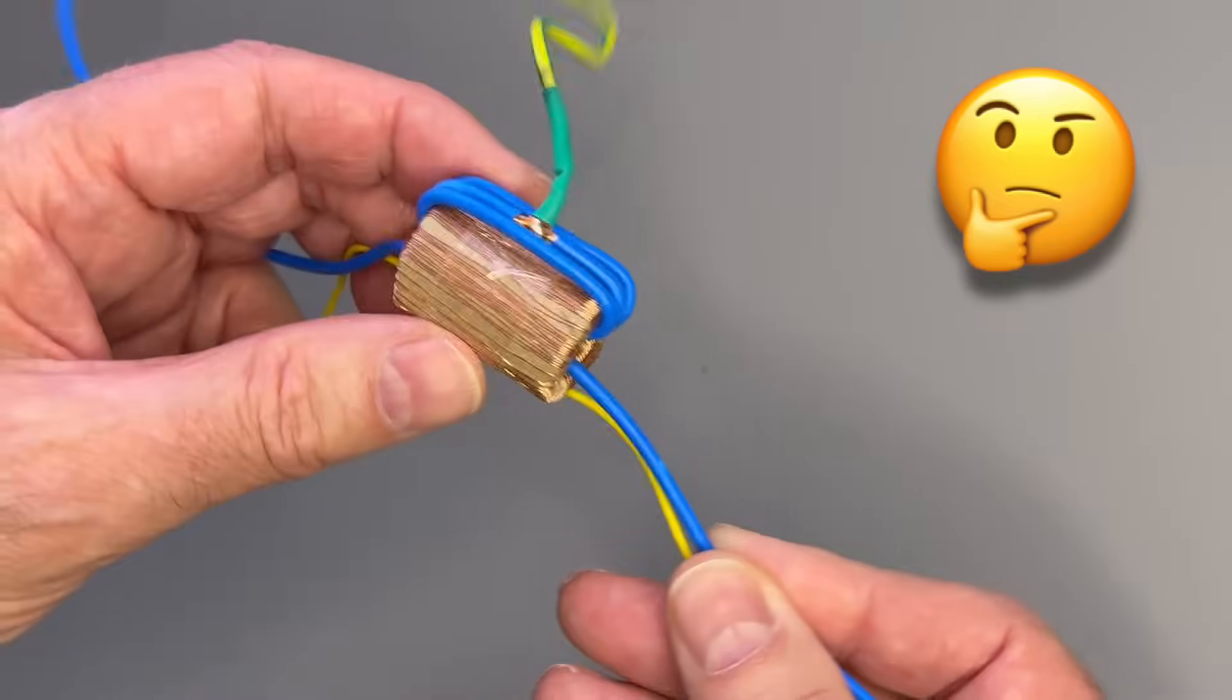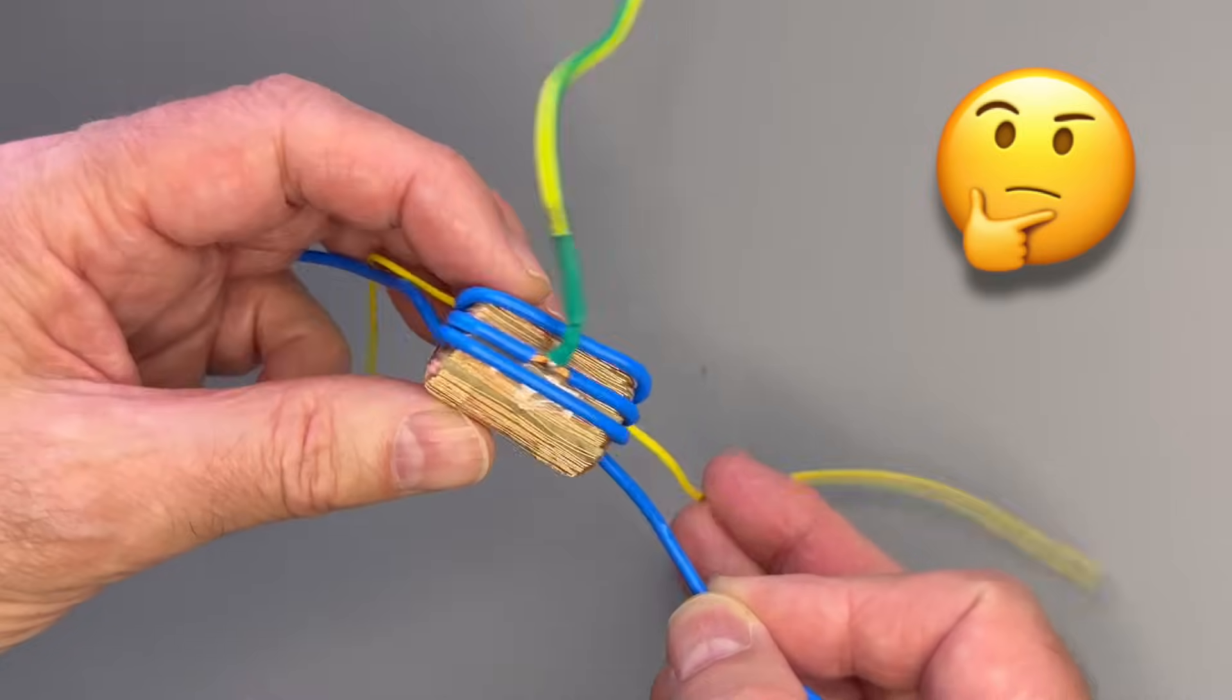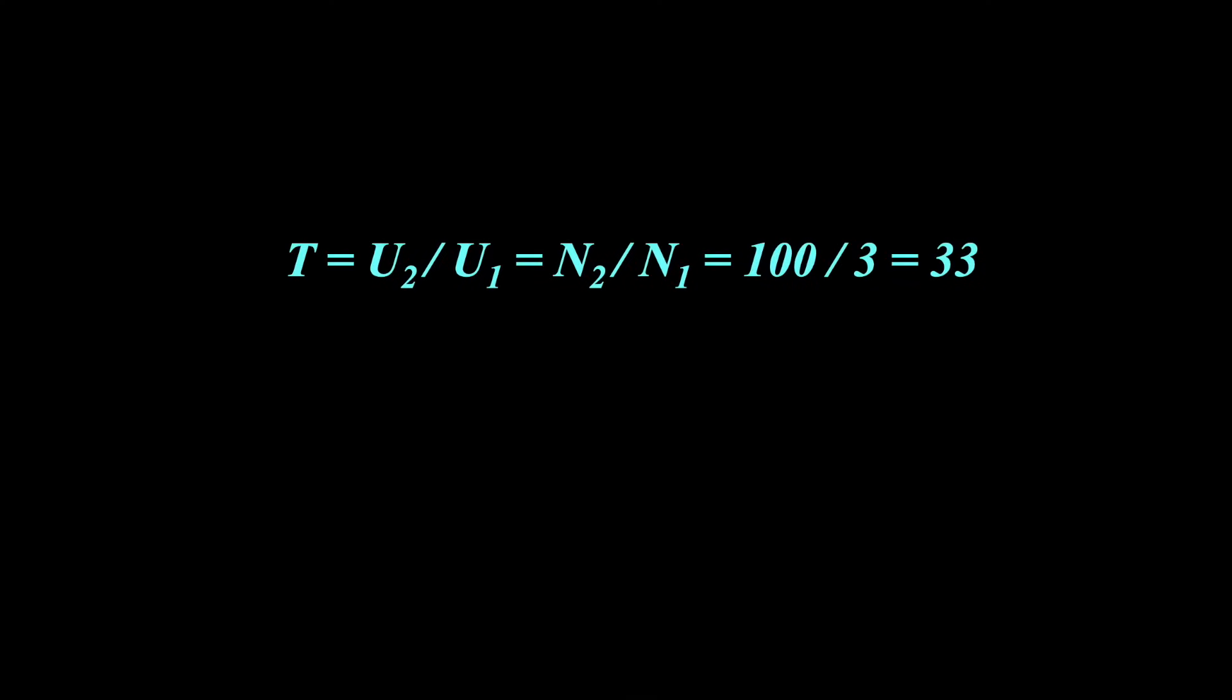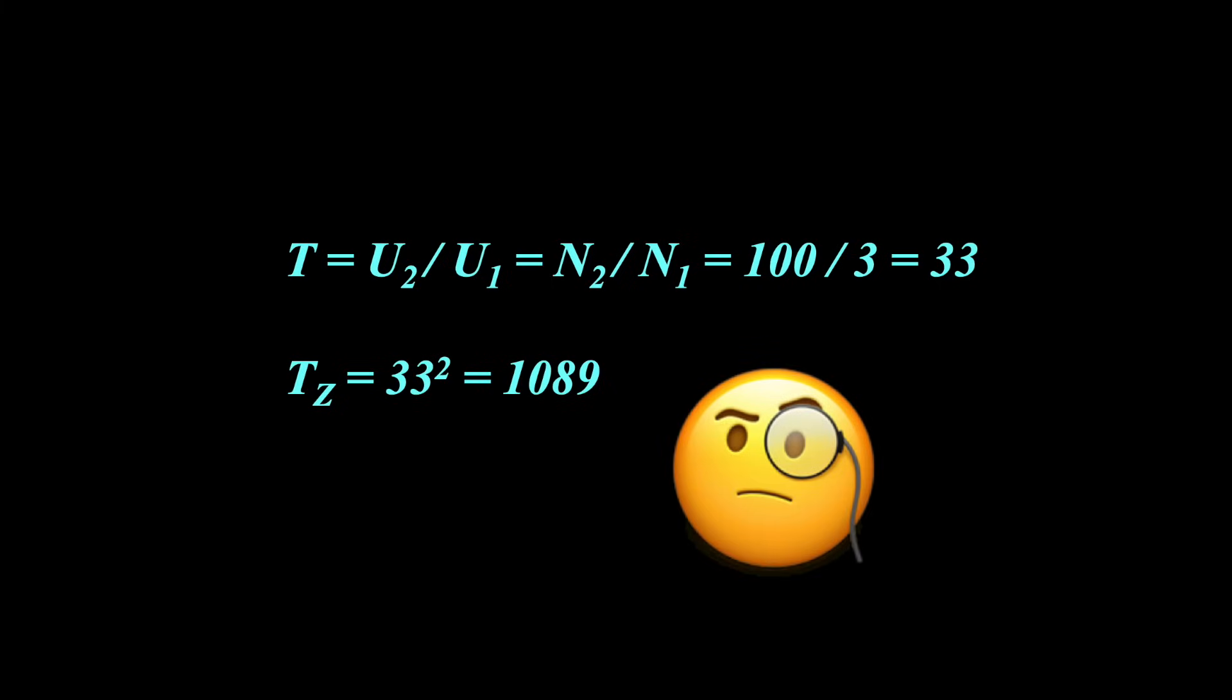Sorry, I made a mistake in the last video. Many thanks to sophisticated viewers, who pointed it out to me right away. The voltage transformation ratio T is 100 divided by 3 equals 33. So far, I was correct. However, the impedance transformation ratio is 33 squared equals 1089. I better call it TZ now.